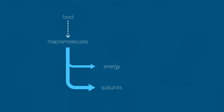What is shown here is actually referred to as catabolism, the first half of metabolism. Energy and subunit molecules are not the only thing extracted during catabolism — electrons are also extracted from the food. And in some ways, the electrons are the most important part of this process, or at the very least, we will make a big deal about these electrons during Biology 112 lecture.